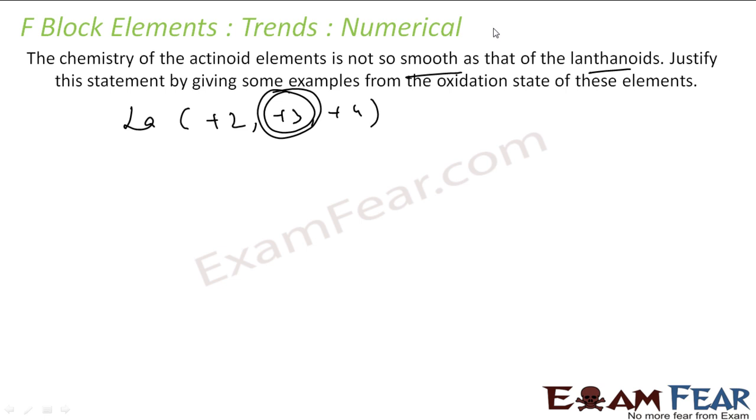Why? Because the difference between the orbitals 4f, 5d, and 6s - if you write the electronic configuration of lanthanides you will see these orbitals there - is quite large.